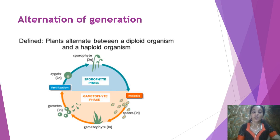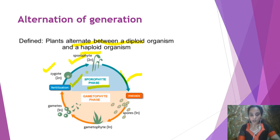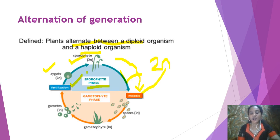Now let's see alternation of generation in a diagrammatic view. The plant alternates between a diploid — the sporophytic generation — and a haploid — the gametophytic generation. You can draw this diagram in your copy. The blue part represents the sporophytic phase: the zygote is diploid (2n), and the sporophyte developed from it is also diploid (2n). Then meiosis takes place — before meiosis it is 2n, and after meiosis it is reduced to n.